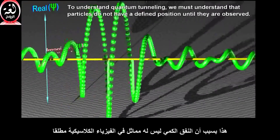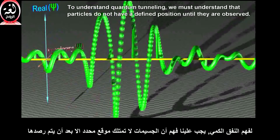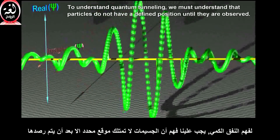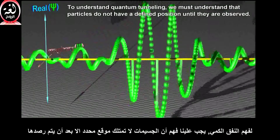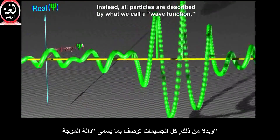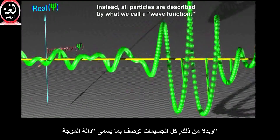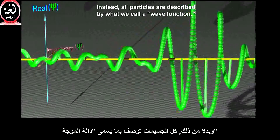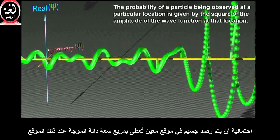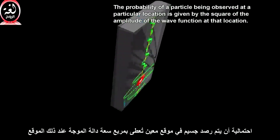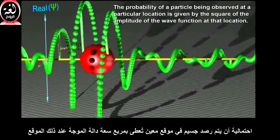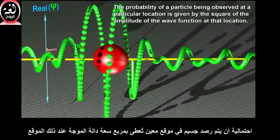To understand quantum tunneling, we must understand that particles don't have a defined position until they are observed. Instead, all particles are described by what we call a wave function. The probability of a particle being observed at a particular location is given by the square of the amplitude of the wave function at that location.